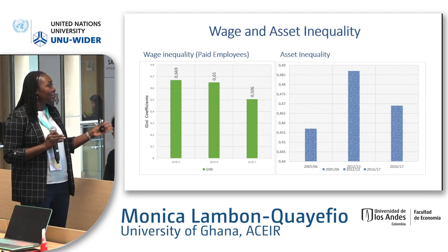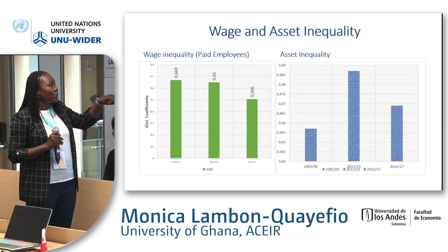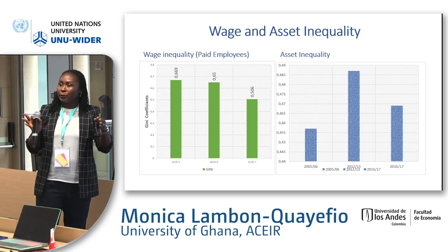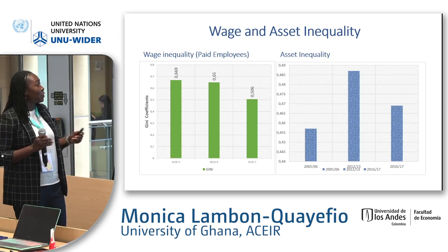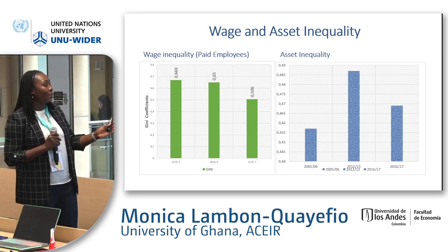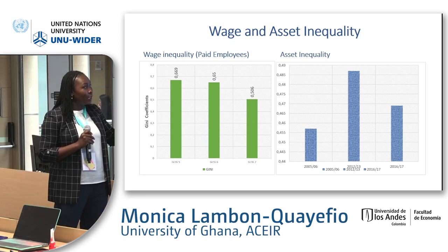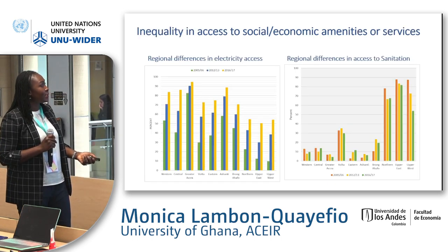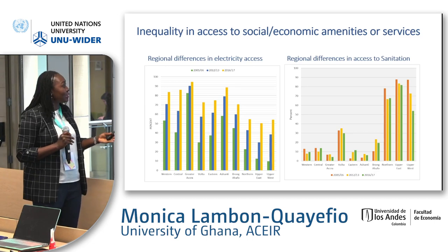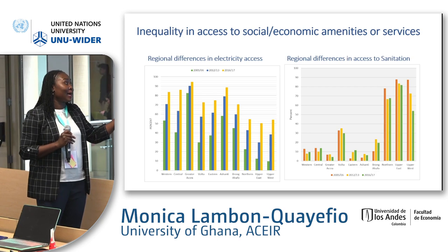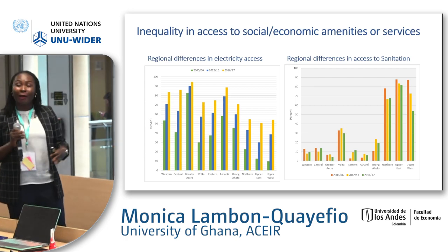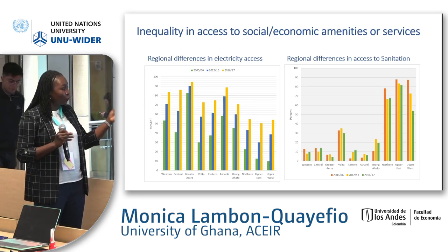Here I am showing wage inequality, mainly for paid employees. For the three waves of the data, wage inequality seems to be decreasing. This is mainly because of a policy introduced around 2009, where the government tried to bridge the gaps in wages for different categories of people. I also show what asset inequality looked like over the three waves: between 2006 and 2013 there was an increase in asset inequality, but this dipped in 2016–2017. I also want to show the regional differences in access to social and economic services such as amenities — electricity and sanitation — where relatively richer regions seem to have more equal access compared to poorer regions.